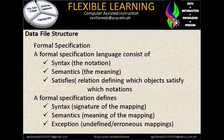The third component is 'satisfies' — the relation defining which object satisfies which notation. When we say satisfies, you can use this syntax, it can be run, there should be no error. You can also create a flowchart that describes those kinds of notation or meaning, and it can also be satisfied. Formal specification defines: syntax defines the signature of the mapping, semantics defines the meaning of the mapping. Exception refers to undefined, erroneous mapping.